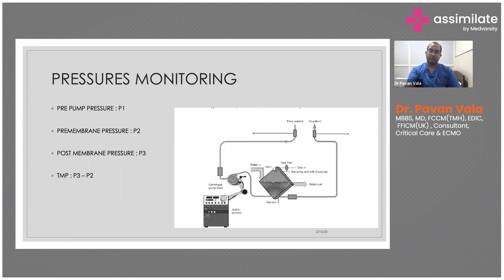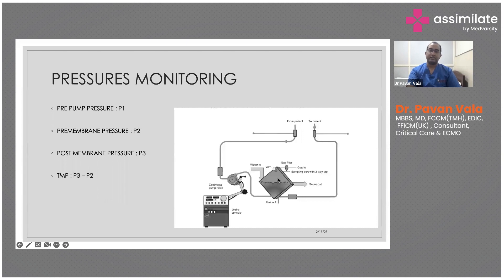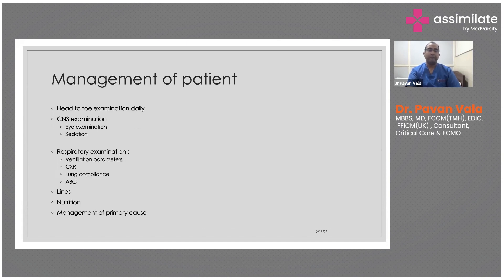As blood goes through the oxygenator — which has many small membranes creating high resistance — pressure builds up then drops across the oxygenator. This pressure difference is called transmembrane pressure (TMP). If P1 goes very negative, there's a problem between the drainage cannula and the pump — either a kinked tubing or hypovolemia. If P2 increases while P3 remains the same, something is wrong with the oxygenator, most likely clot formation due to the high surface area. If TMP rises, you need to check if the oxygenator is failing.